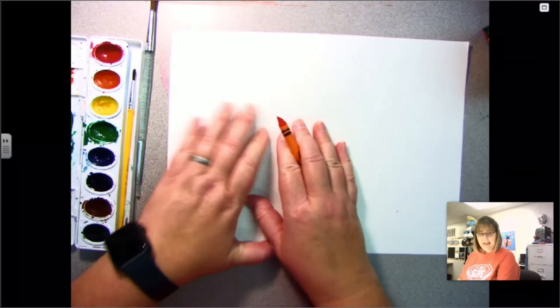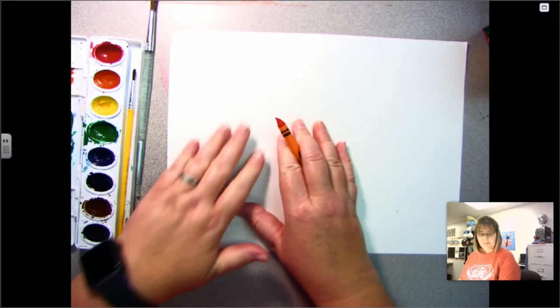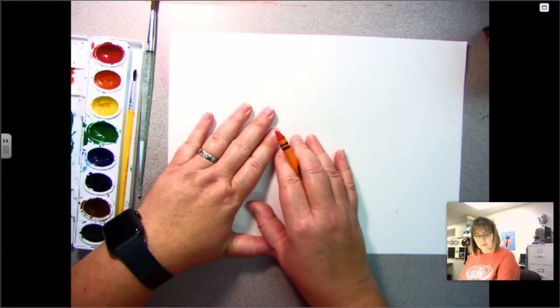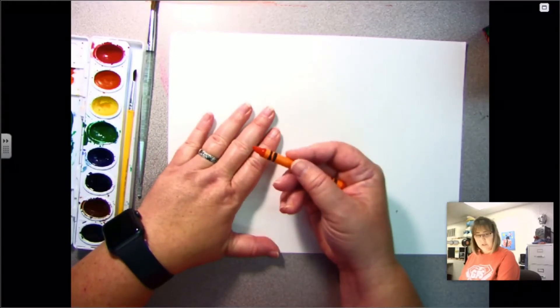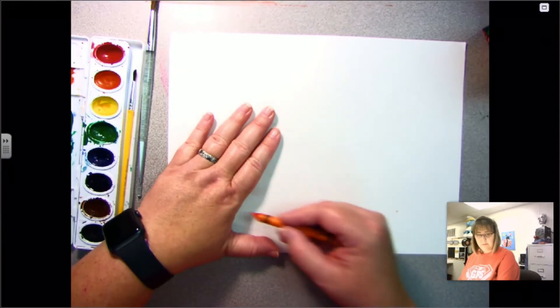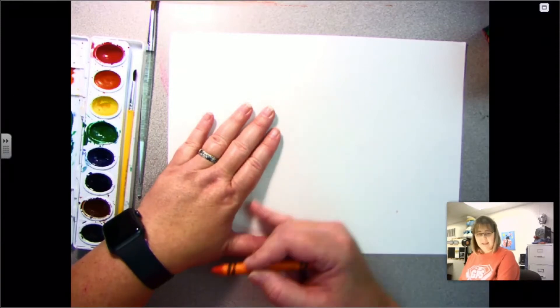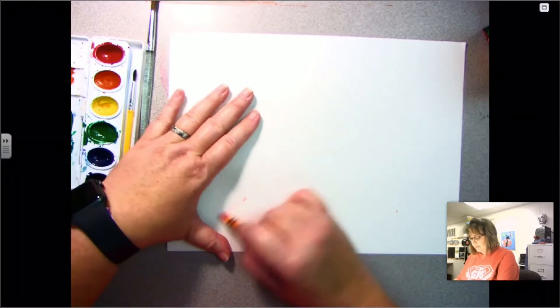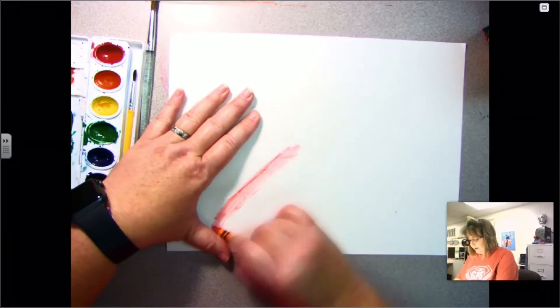I can feel it under the paper with my hand. I'm gonna hold it down with my extra hand, and I'm going to use my crayon to rub over the paper so that I can get a rubbing of the texture that's under it. This is kind of hard on crayons, so you might not want to use your new crayons.